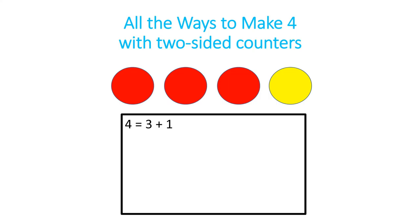So you could say one way to make four counters is three red plus one yellow, and you could write it just like you see on the screen.